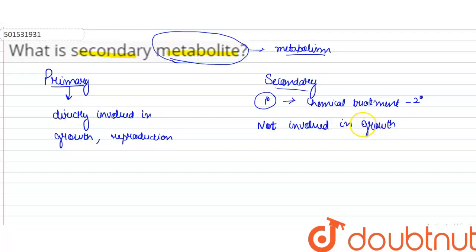If we take an example of secondary metabolite from plants, there is heroine. Poppy plant produces morphine, which is a primary metabolite.